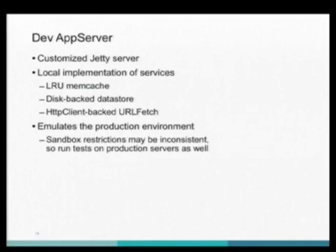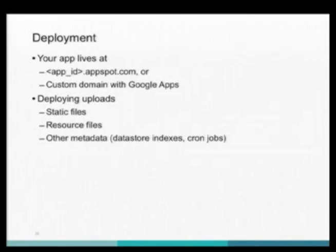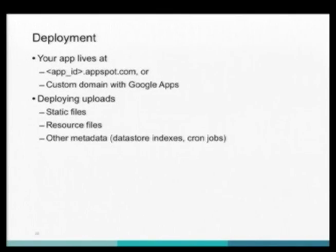The app server runs inside a server container. You have a local implementation of these APIs that you can run locally without setting up that server, and it emulates the production environment with a few caveats. For deployment, you create an app ID — it can be myappid.appspot.com or a custom domain. You can deploy static files, resource files, and other metadata. You put static files in the public folder, it gets pushed to production, and that folder is stored on caching servers that are always available and fast.